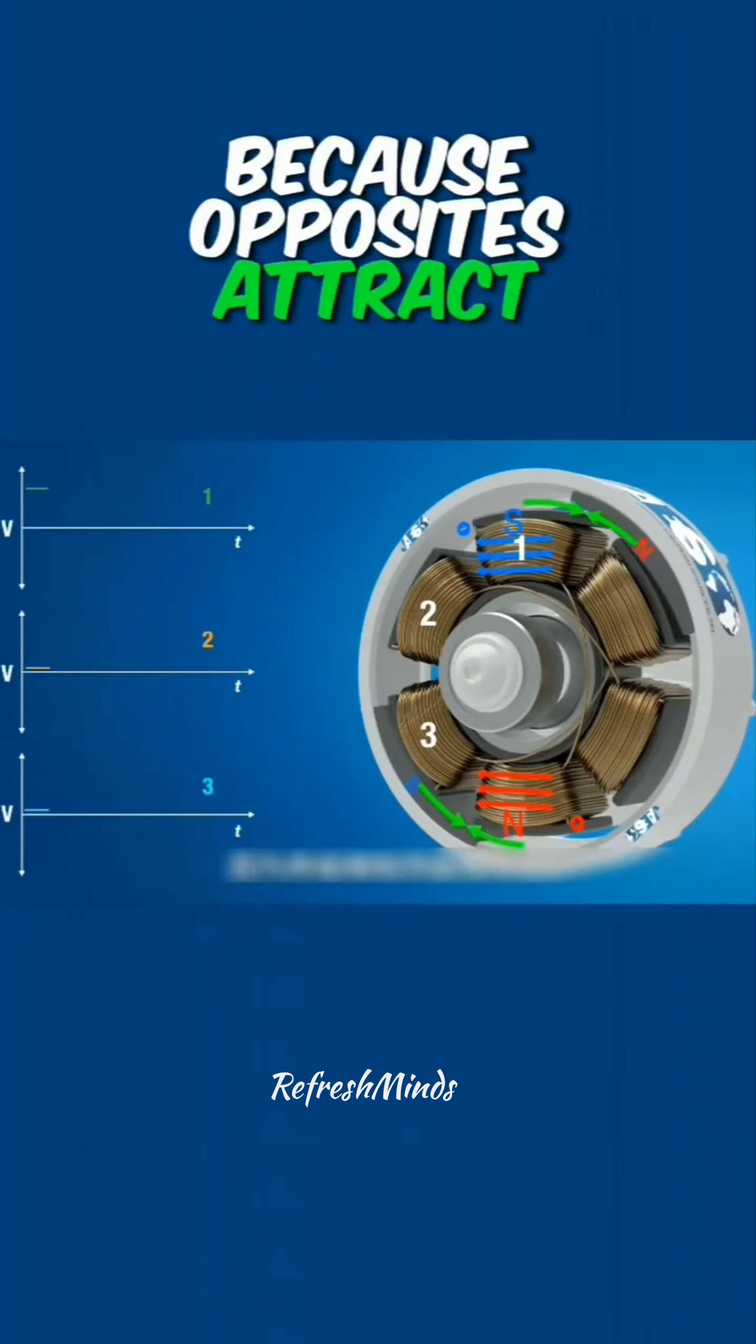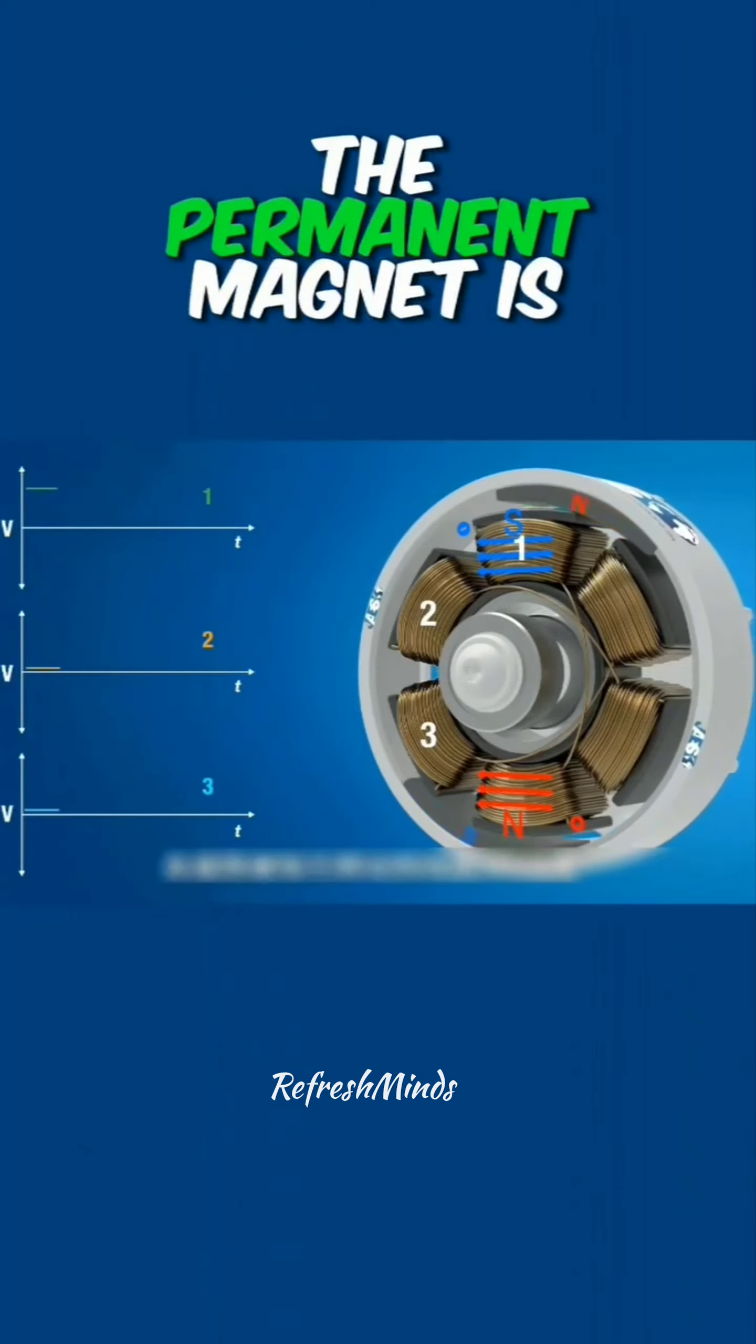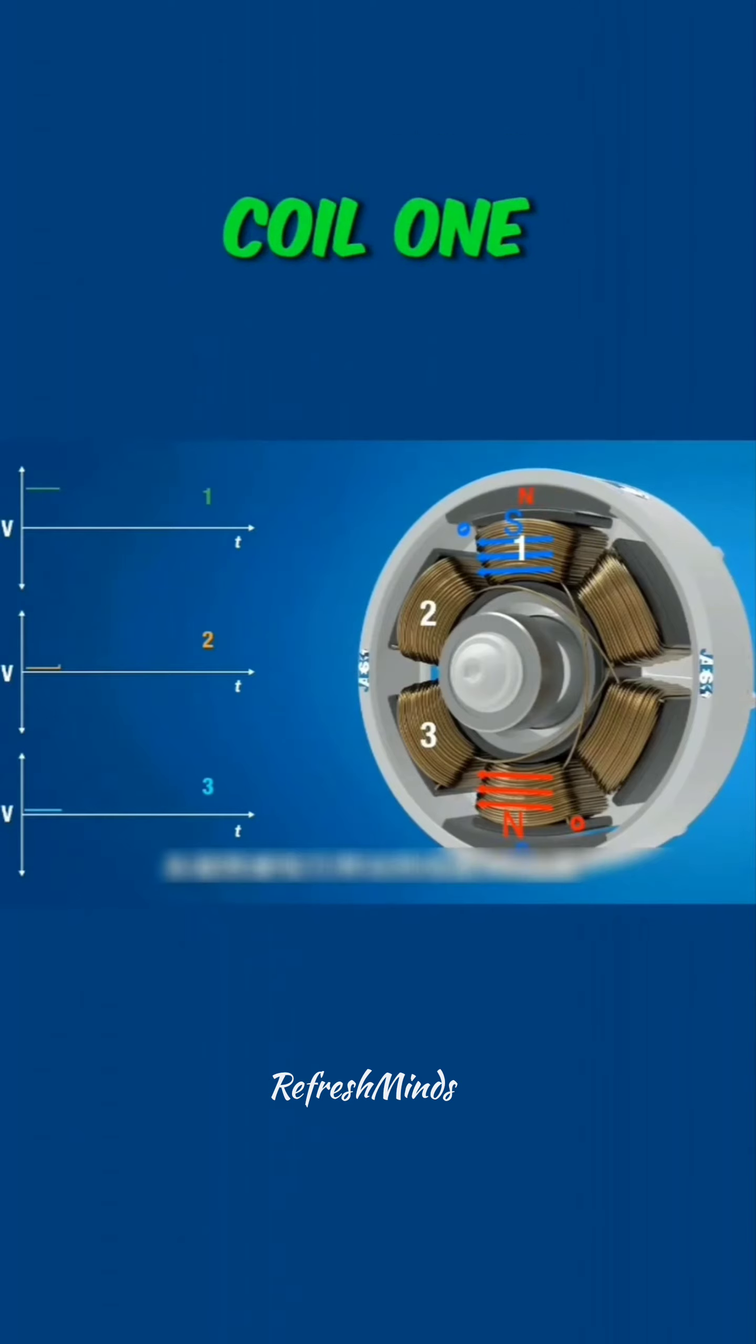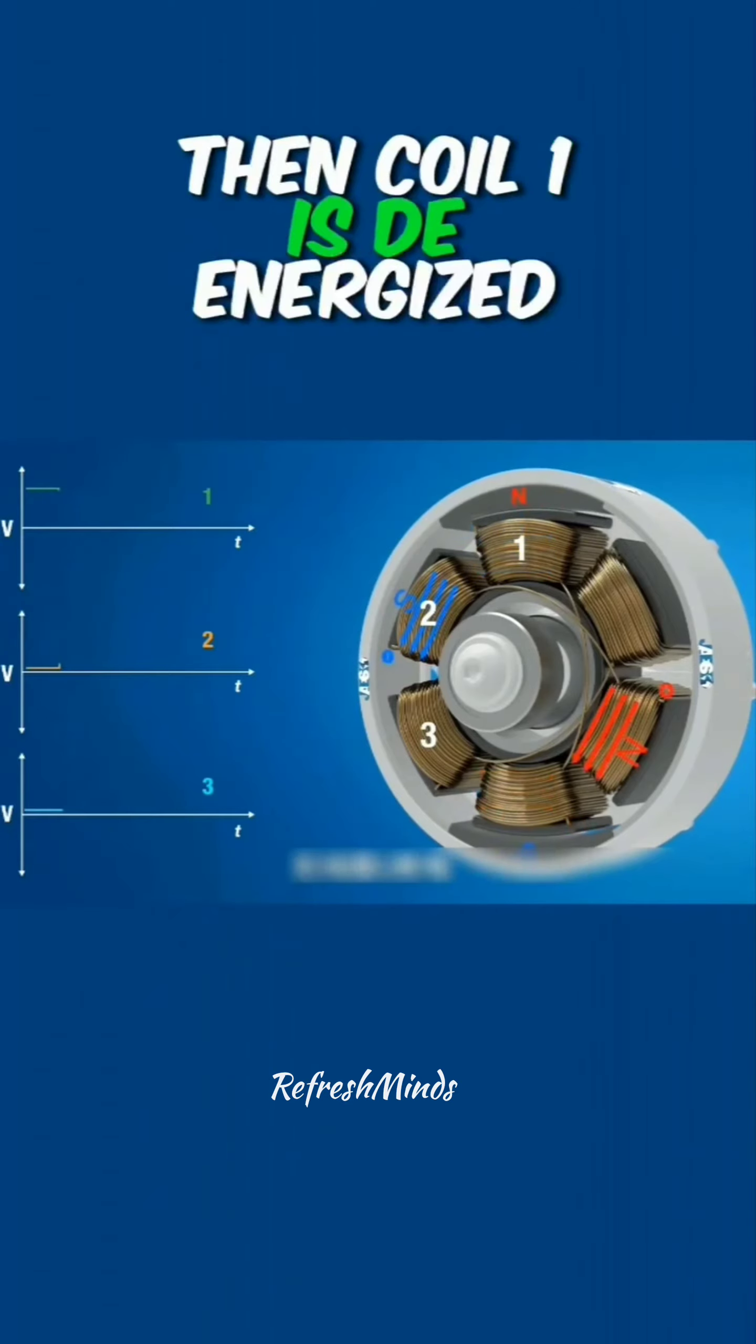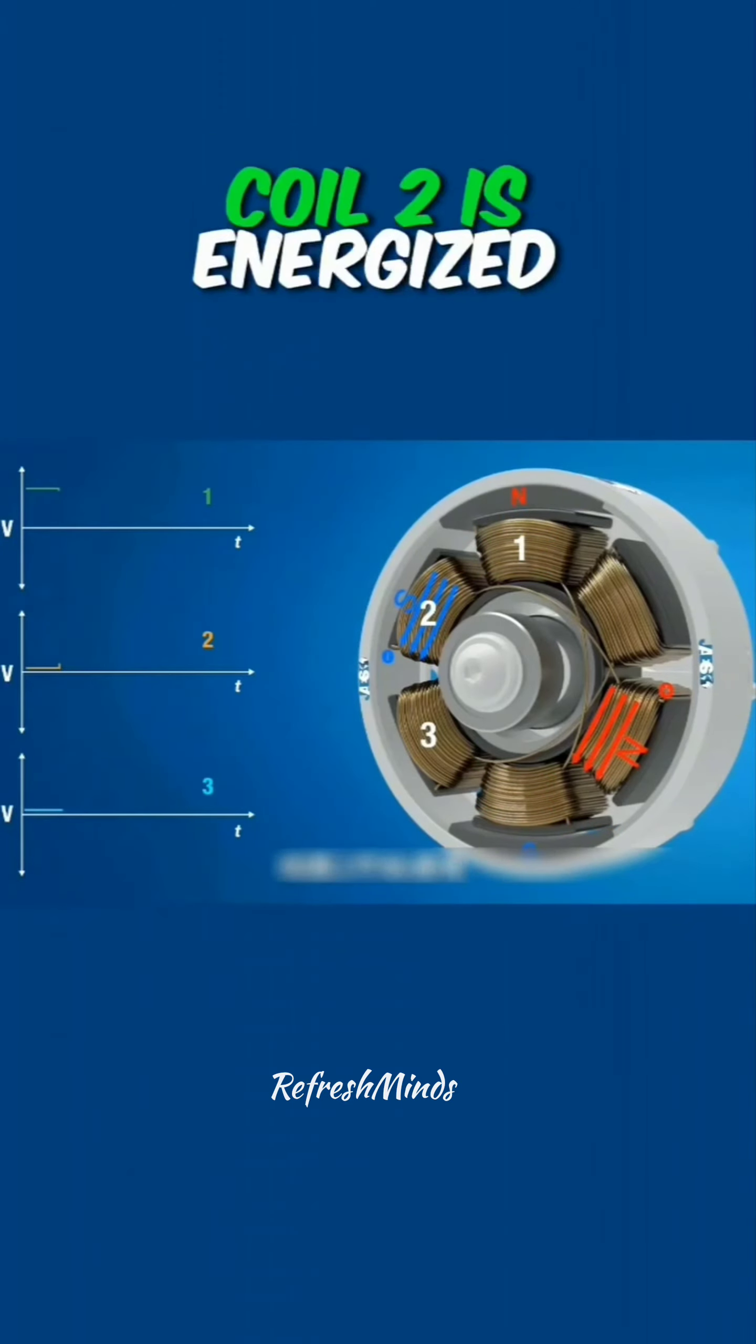Because opposites attract and opposites repel, the permanent magnet is attracted to rotate to the position of coil 1. Then coil 1 is de-energized, coil 2 is energized, and the permanent magnet will continue to be attracted to rotate.